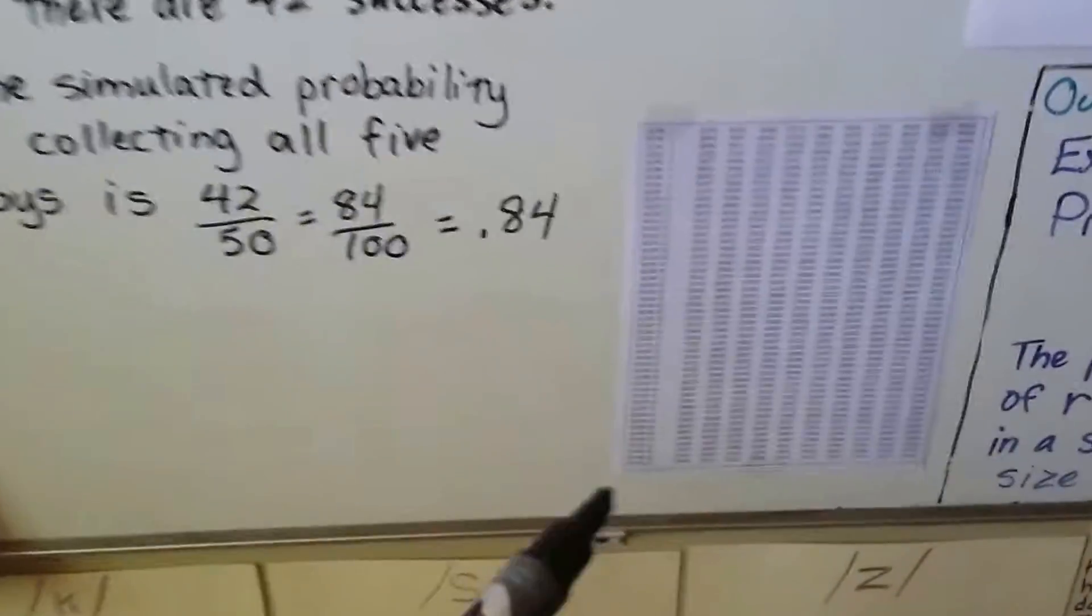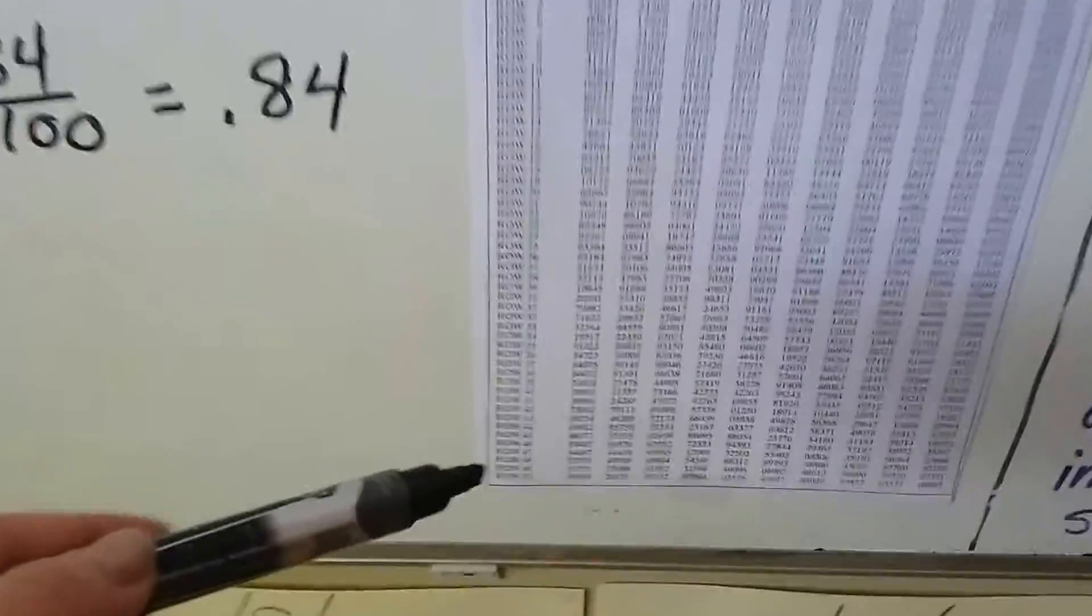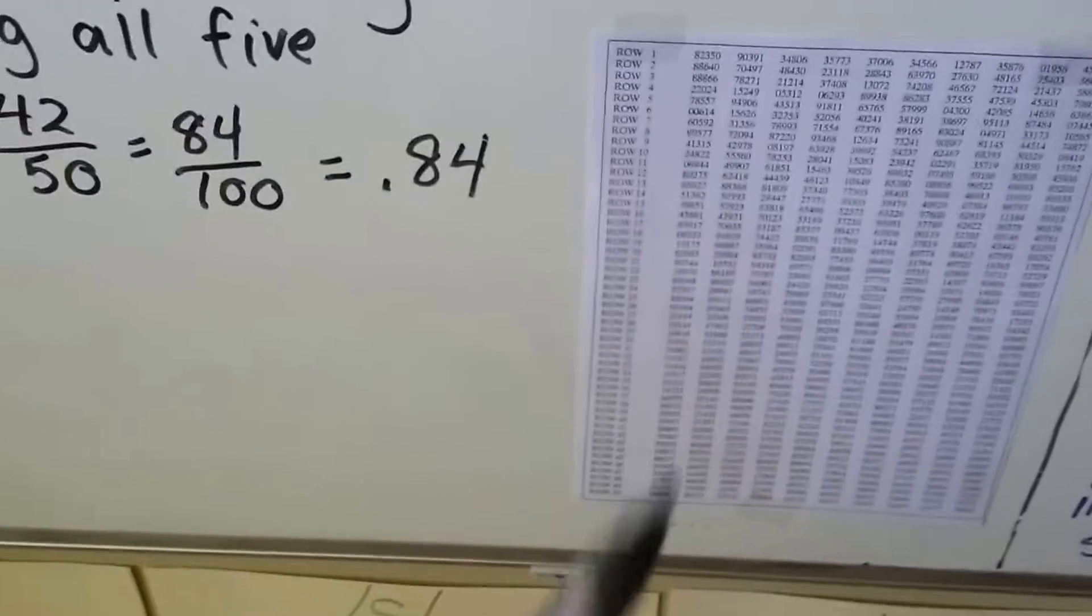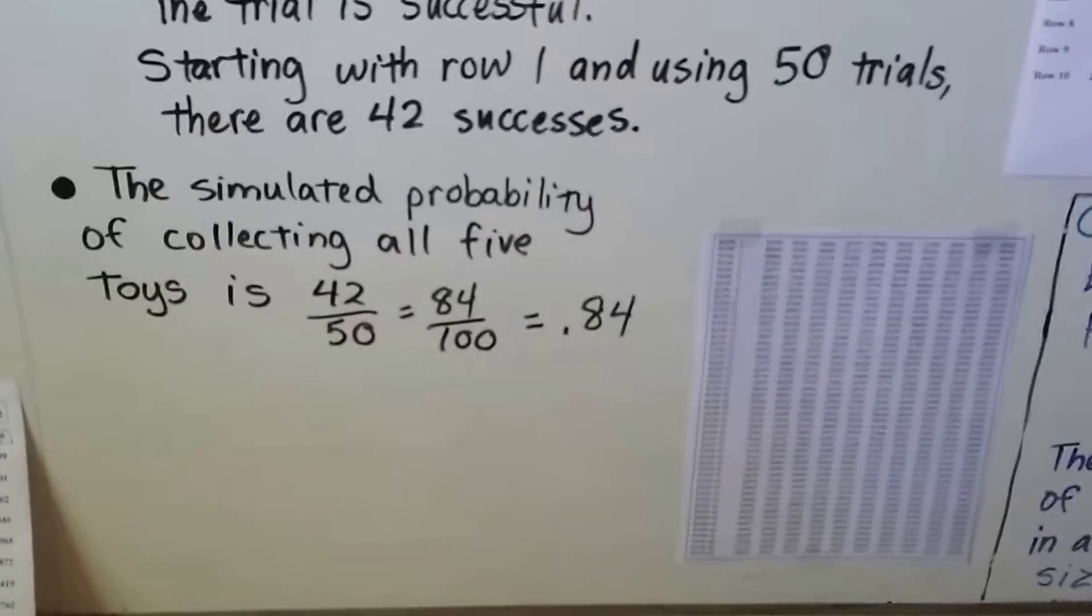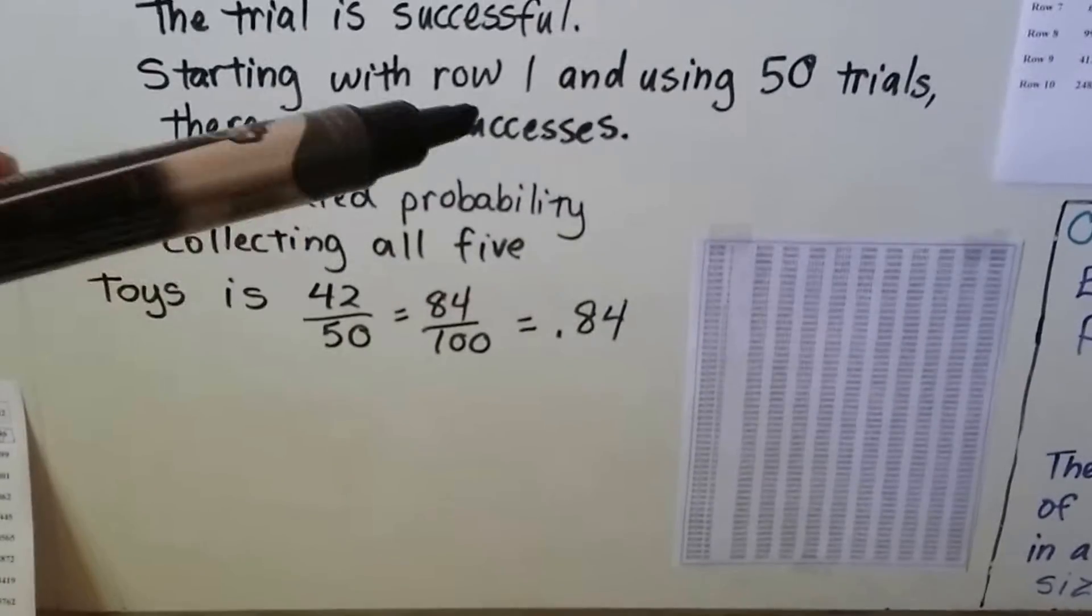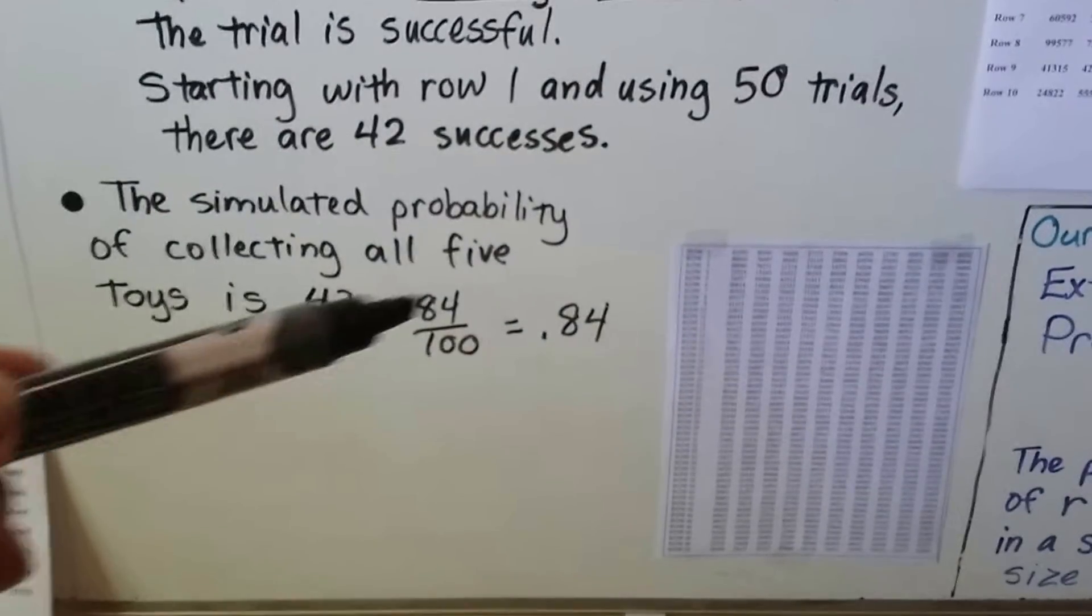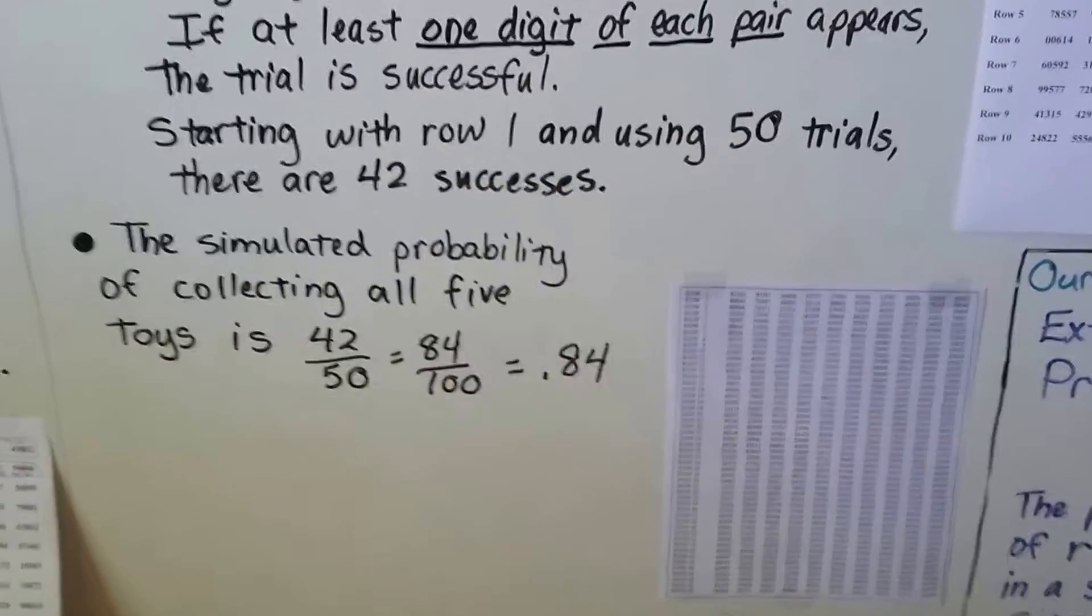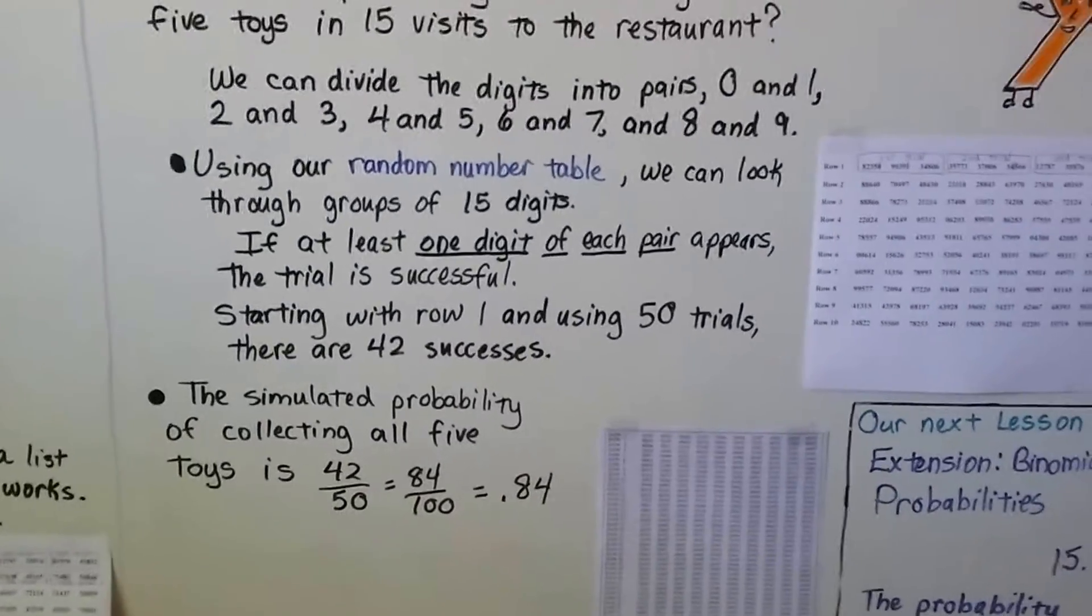So we could have a random number table that's this big. Look at this. It goes all the way down to row 50. This was pulled out of the back of a math book. And the simulated probability of collecting all five toys would be 42 successes out of the 50 trials. If we multiply them by 2, we get 84 over 100. That's 0.84. So that would be the probability of collecting all five toys in 15 visits.